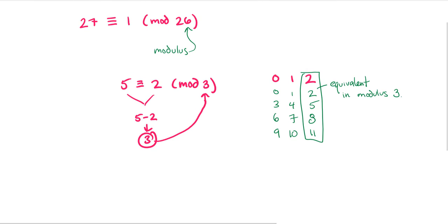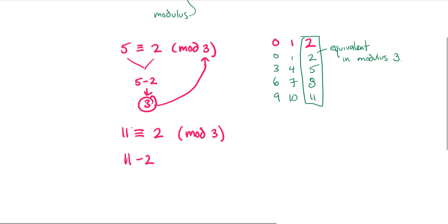I'll give another example here. We can check to see if 11 is congruent to 2 in mod 3. 11 minus 2 is 9. And 9 is divisible by 3. So yes, 2 and 11 are equivalent or sometimes we'll call that congruent.